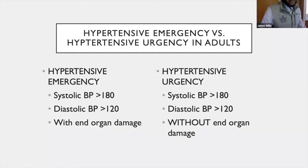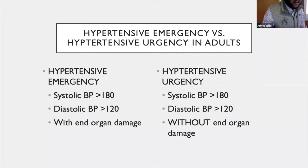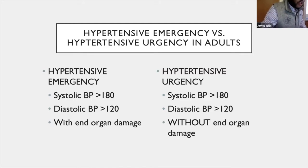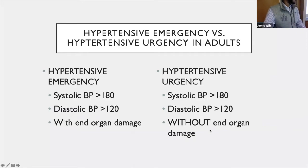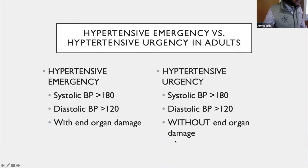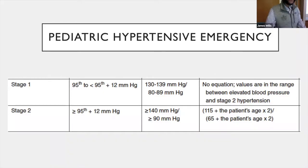Most of you are already aware of the definition in adults of hypertensive emergency and urgency. It's usually a systolic blood pressure of 180 or above, or a diastolic blood pressure of 120 or above with end organ damage. In urgency, it's just without organ damage.